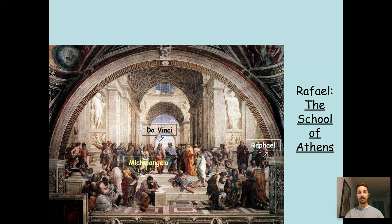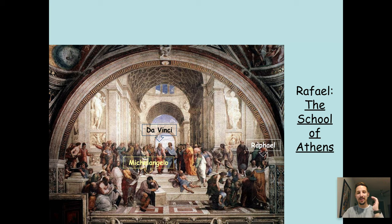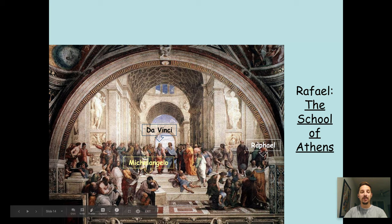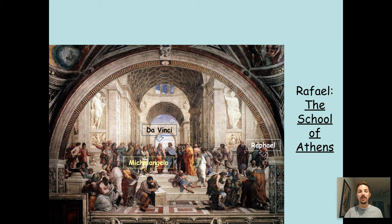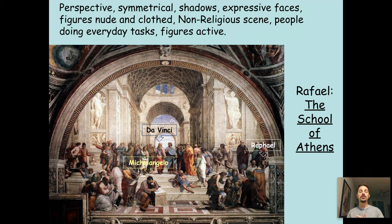This is one we just looked at, but I wanted to go back to it. This is by Raphael — it's the School of Athens. He actually included some faces of his contemporaries and himself in his painting. This figure right here has the face of Leonardo da Vinci, this figure has the face of Michelangelo, and this figure is Raphael himself. I thought that was kind of cool. Again, we have perspective, symmetry, shadows, expressive faces, figures that are both nude and clothed, it's a non-religious scene, people doing everyday tasks, figures are active — they're walking, they're talking, they're carrying on, doing all sorts of different activities.